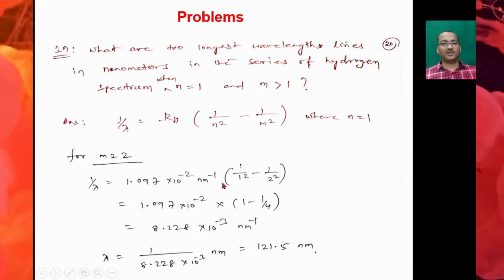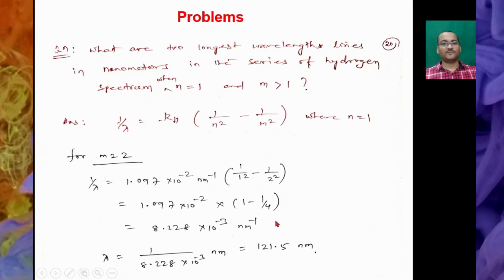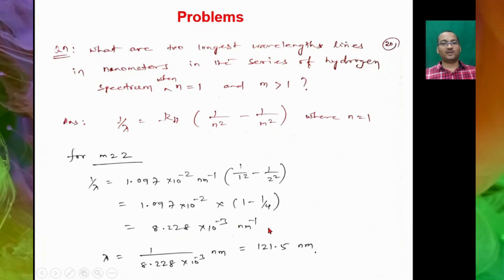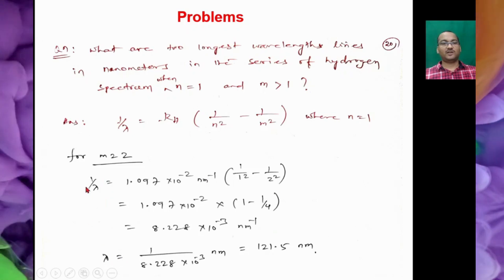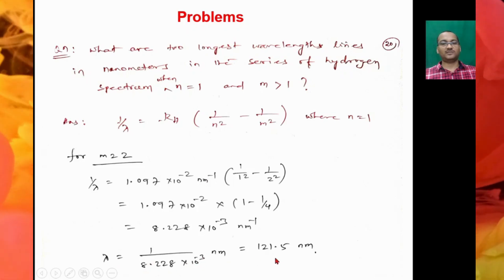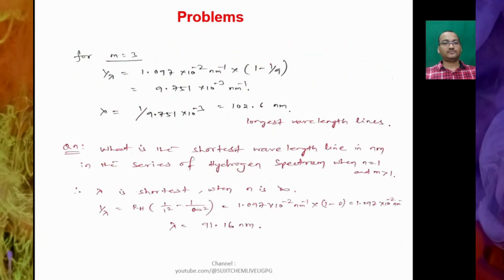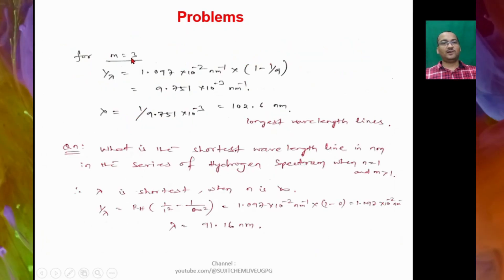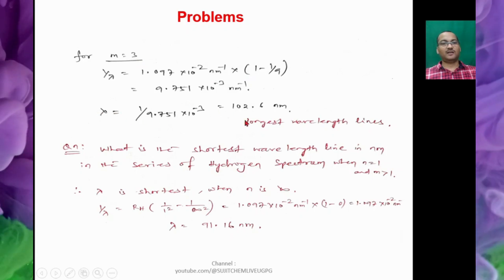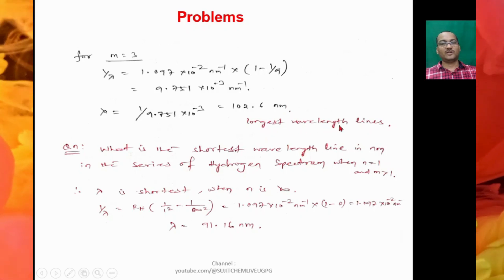So it is found to be 8.228 × 10⁻³ nanometer inverse, so that becomes 1/λ. So λ = 1/(8.228 × 10⁻³), so that becomes 121.5 nanometers. Similarly for N = 3, we can put the values and we find λ = 102.6 nanometers. So that's the longest wavelength line.